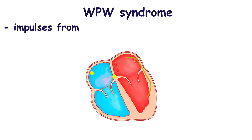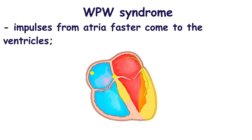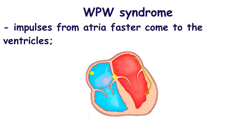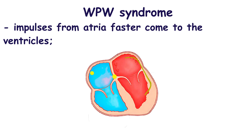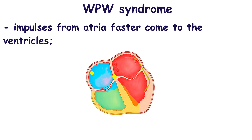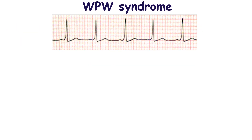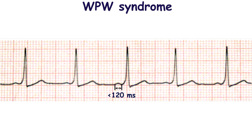When the Kent bundle is functioning, impulses generated in the sinus node or other parts of the atria reach the ventricles faster. There is no physiological delay. The ECG shows this as a shortened PR interval, because the impulse is conducted faster via the accessory pathway.